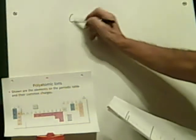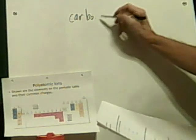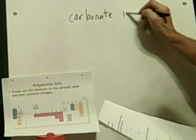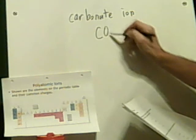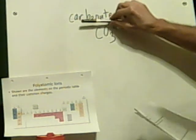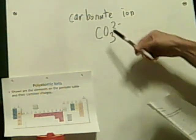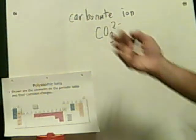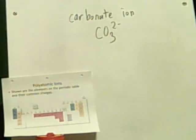Let's go to carbonate. If you don't have this memorized, it's hopeless — hopefully you'll have a reference sheet. I happen to remember this: I believe it's CO3 and it's a minus 2. A good memory aid is to learn common household chemicals. This particular one would be sodium bicarbonate — it's baking soda. Everybody knows baking soda.